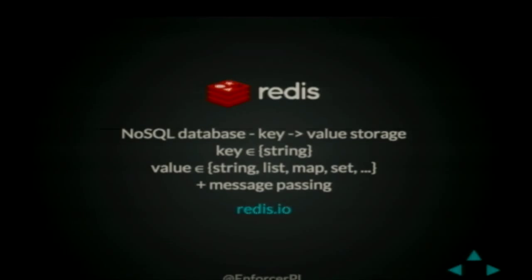Redis also has simple support for message passing. First I will introduce a case study, then I will show you how to correctly implement a distributed binary semaphore — a so-called mutex — and later a semaphore. Finally I will give some tips and there will be time for questions.